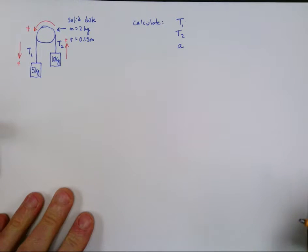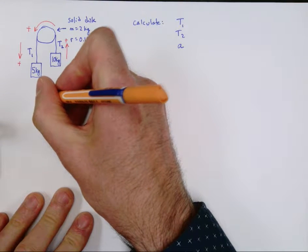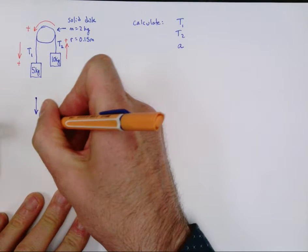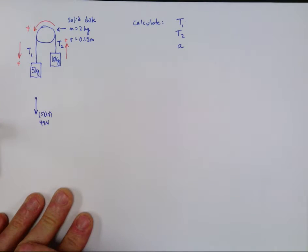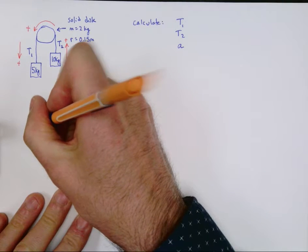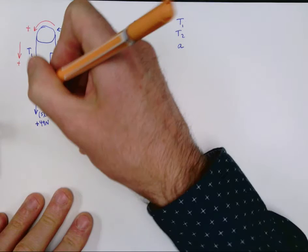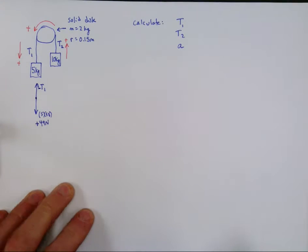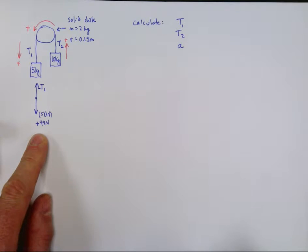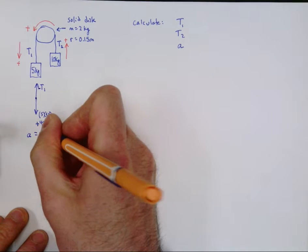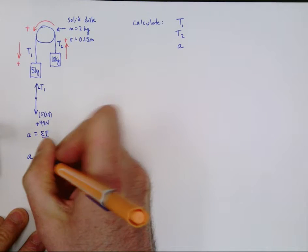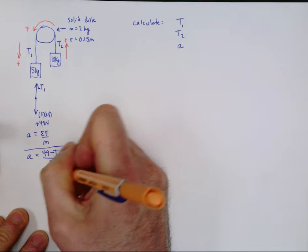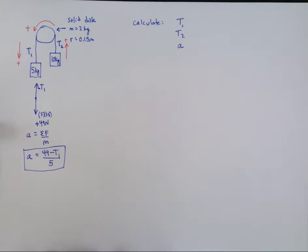First, a free body diagram of each mass. For the 5 kg mass, it has weight: 5 times 9.8 gives us 49 newtons — positive, since down is positive on the left side. Upward we have T1, with a negative sign. The equation becomes: acceleration equals (49 minus T1) divided by 5. That is the first of our three equations.